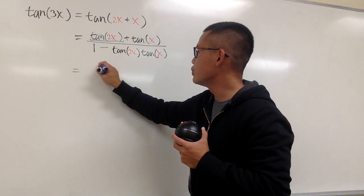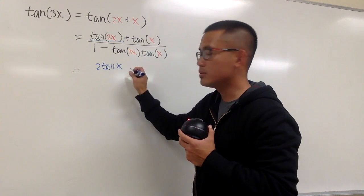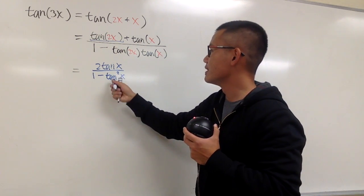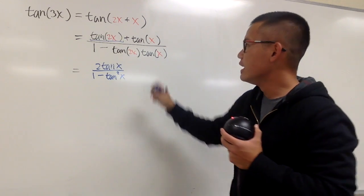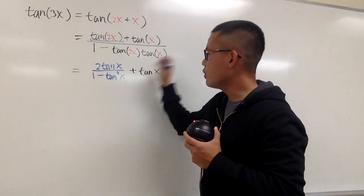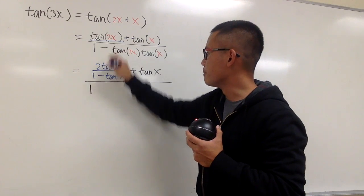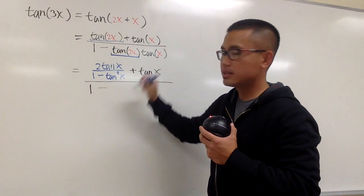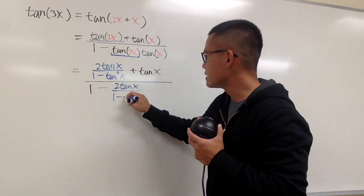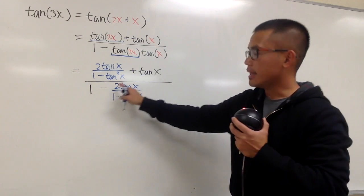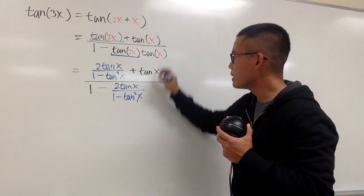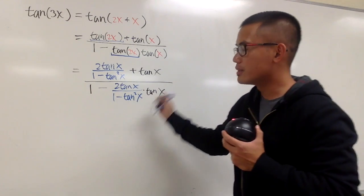Tangent of 2x, by the double angle identity, is going to be 2 on the top, and then tangent x, all over 1 minus tangent squared x. This blue portion is just for that. And this will stay the same — we add tangent x, all over 1, and then minus tangent of 2x, which is the same as 2 times tangent x over 1 minus tangent squared x, multiplied by tangent x.